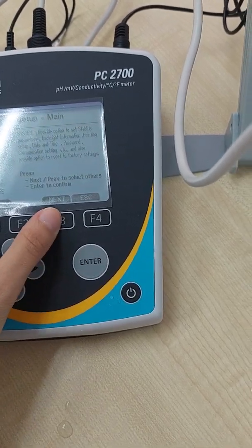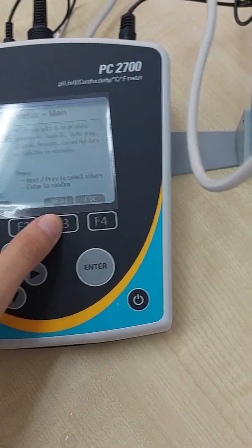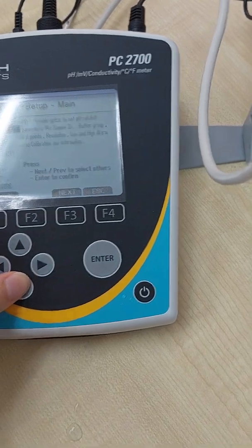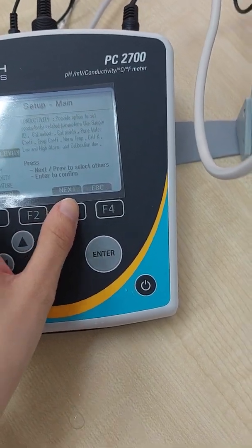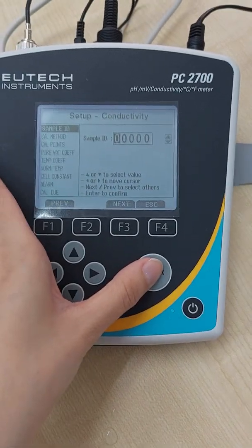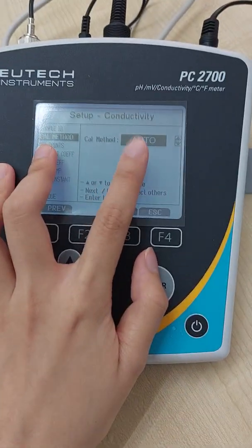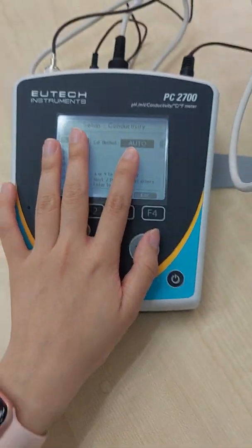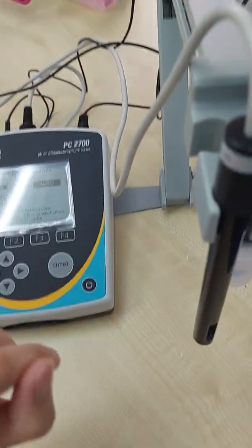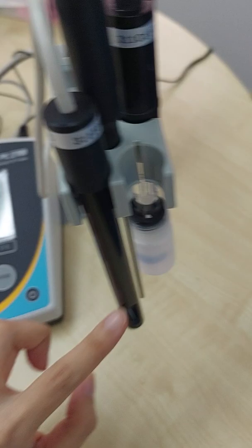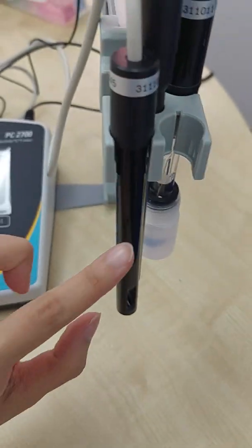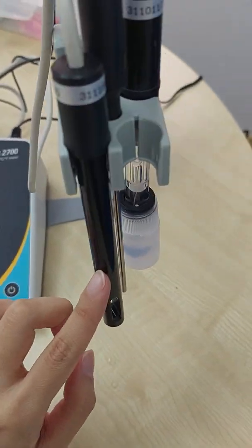Then we can go to conductivity. So conductivity, usually we will go for auto mode, meaning that if we do calibration one four one three, it will automatically set the point to one four one three.